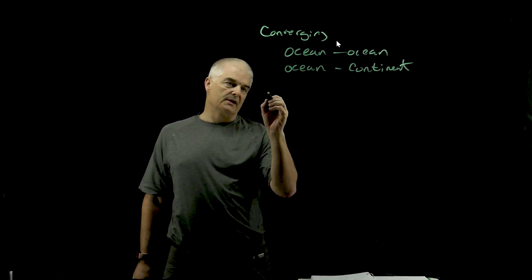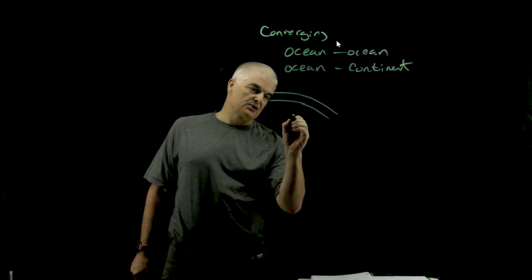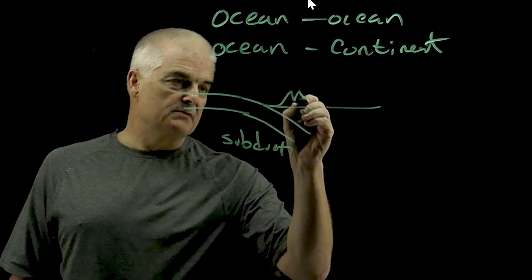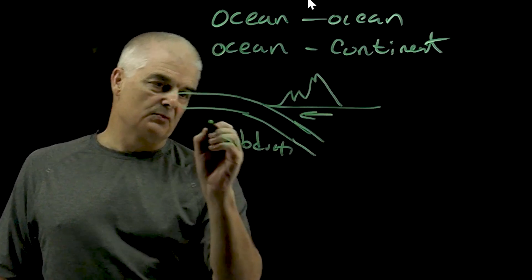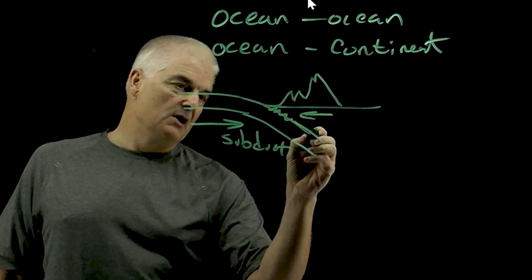That is because, as you know from previous learnings, if I have a plate that's subducting, it's going to push these mountains up. Then what happens is at this boundary, this is coming this way and this plate is coming this way. There's going to be friction right here which is going to melt rock.